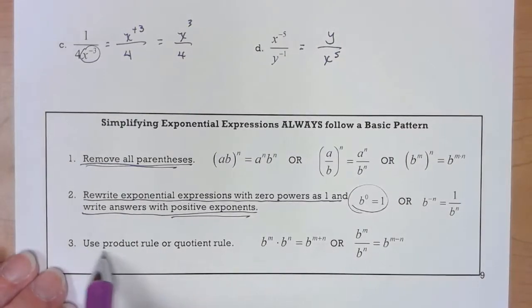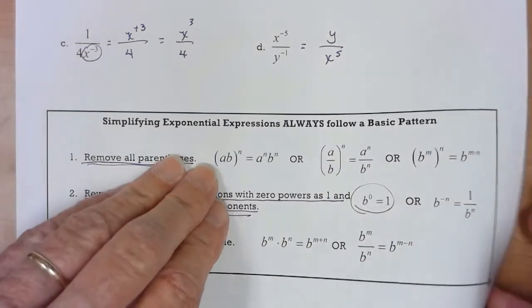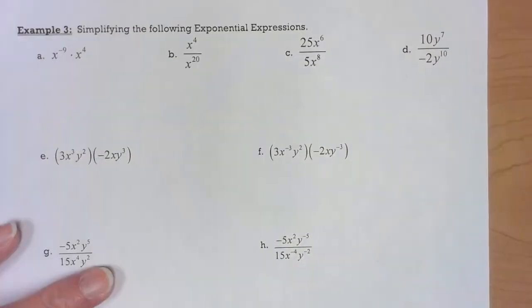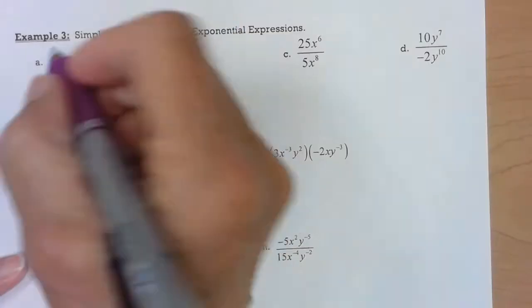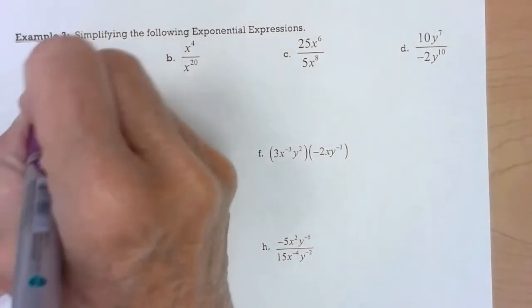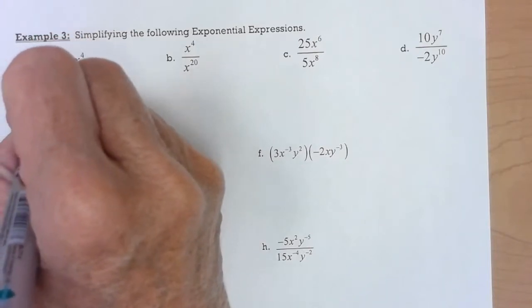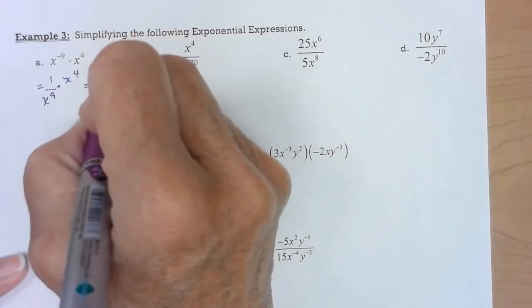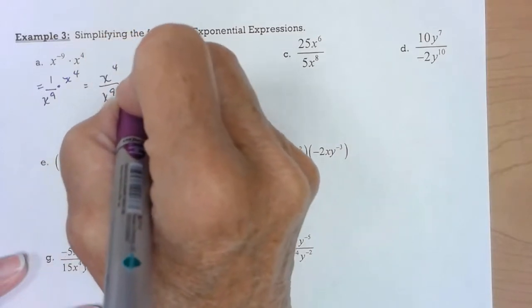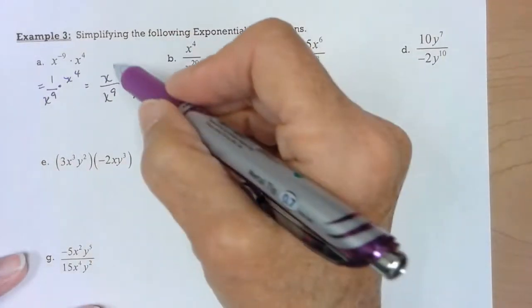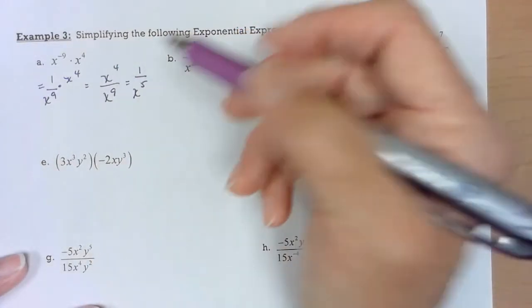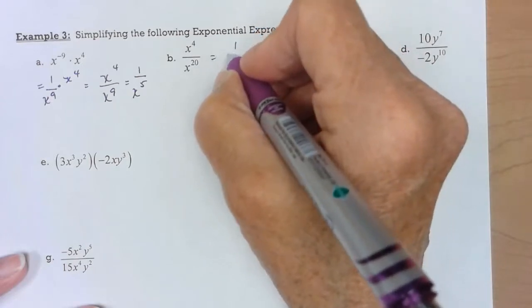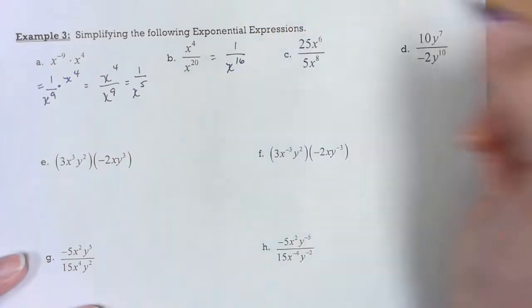The last thing you do is use your product rule or quotient rule to simplify. Now the next page has a whole bunch. So x to the fourth, one over x to the ninth. I subtract going to the larger exponent when they're both positive. That one was quick.